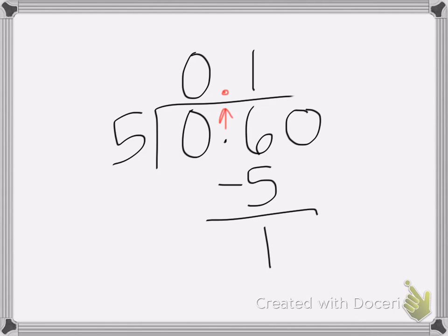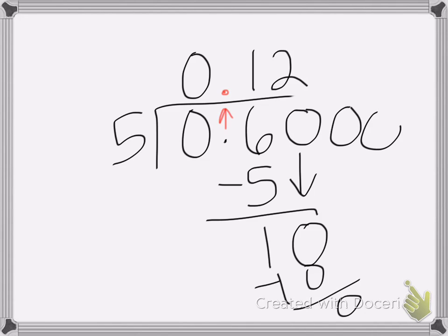So I'm going to add a 0 and bring it down. 5 goes into 10 two times, that's 10, and we get 0. So remember, with decimal places, we have to continue adding zeros until we end up with 0 down here for my answer.